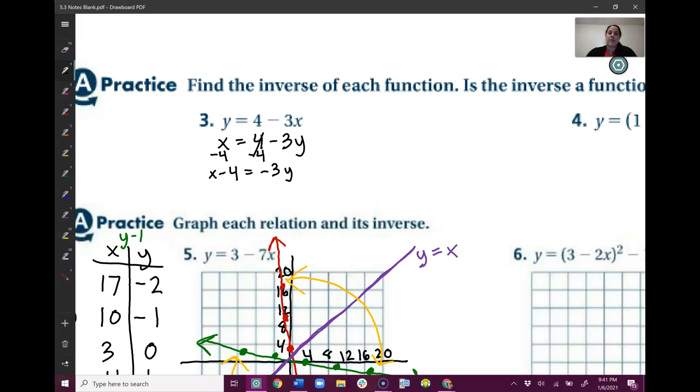So I have x minus 4 equals negative 3y. And a lot of students at this point might try to add 3, but that 3 isn't subtracting. That negative 3 and the y are right next to each other, so they're multiplying. It's negative 3 times y. So since they're multiplying to get rid of it, I divide. So now I've got y by itself, which is what I wanted. Equals x minus 4 divided by negative 3. And there we go.